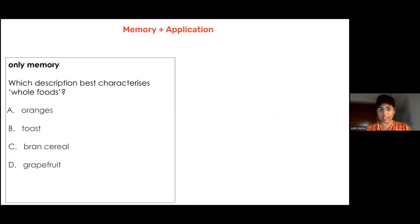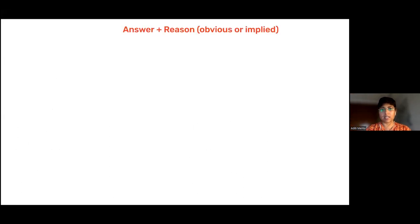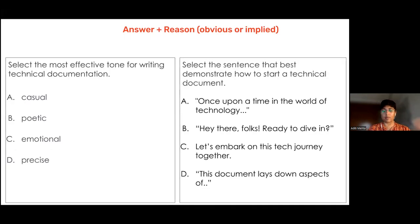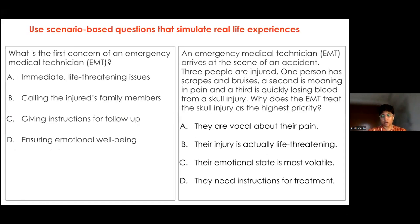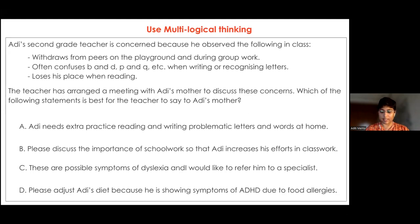To summarize the LOTS to HOTS transformation: memory plus application together — rather than only memory recall — becomes something a child needs to apply or analyze, making it a HOTS skill. Answer plus reason, where an implicit reason is given, becomes an application-type question. Scenario-based questions that simulate real-life experiences make children empathize with a situation and use logic and reason to choose the correct answer. Using visuals and multi-tiered, multilogical thinking are all great ways to transform LOTS into HOTS.